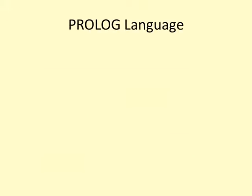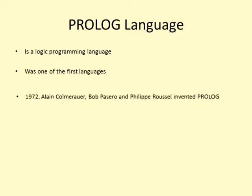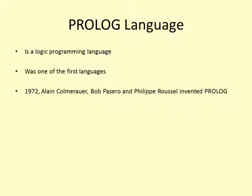Prolog is a logic programming language associated with artificial intelligence and computational linguistics. Prolog was one of the first logic programming languages and still is among the most popular languages today. In 1972, Alain Colmerauer and his colleagues Bob Pasero and Philippe Roussel invented Prolog at the University of Marseilles in France. Prolog stands for Programming in Logic. Since its birth, it has branched off into many different dialects. The first Prolog interpreter was built by Roussel, and the first Prolog compiler was credited to David Warren, who was an expert in artificial intelligence.